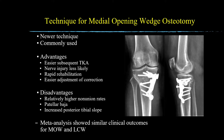In the medial opening wedge technique, an osteotomy cut is made in the posteromedial proximal tibial metaphysis, and a gap is opened which shifts the weight-bearing axis laterally to correct varus malalignment. The gap is filled with bone graft material and stabilized with plate and screw fixation.